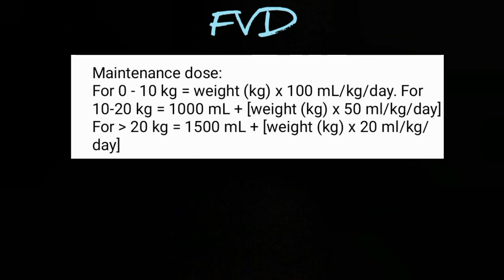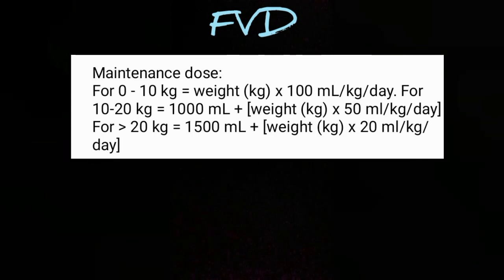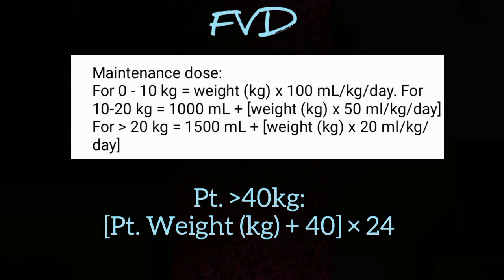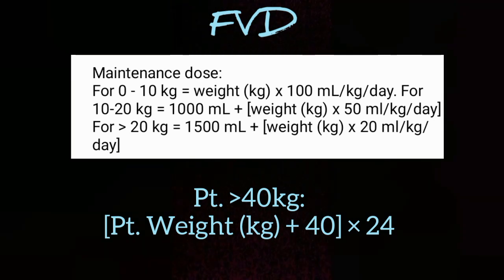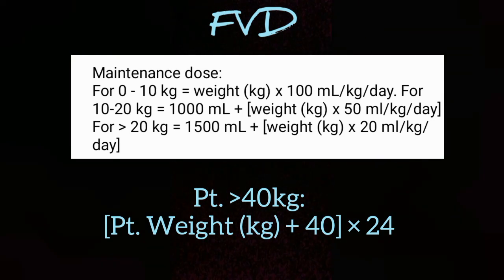These are the formulas for maintenance fluid for 0–10 kg individuals, for 10–20 kg individuals, and for more than 20 kg individuals. There is an easier formula for a patient above 40 kg: you add 40 to the weight of the patient and multiply it by 24. This will give you the maintenance dose for 24 hours.